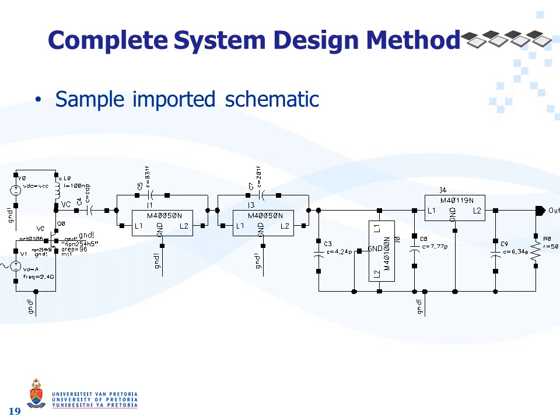This slide shows the schematic resulting from importing the netlist of the class F power amplifier shown in the previous slide. Various blocks in the imported schematic have been rearranged for clarity. The square blocks are the spiral inductors designed by the inductance search algorithms. From left to right, one can see the active device, the third harmonic waveform shaping tank, the fifth harmonic tank, the base resonant tank, the output matching network — in this case a Pi matching network — and the 50 ohm antenna.